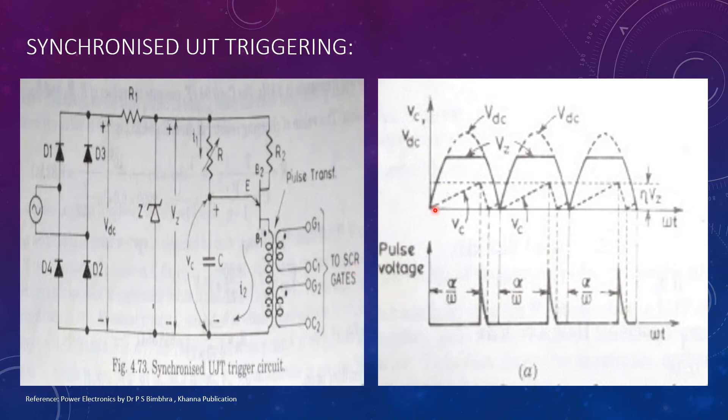The capacitor charges up to eta VBB or eta VZ. As soon as it exceeds eta VBB, the capacitor discharges through the emitter-base 1 junction. When the capacitor voltage reaches the valley point of the UJT, the capacitor begins to charge again.